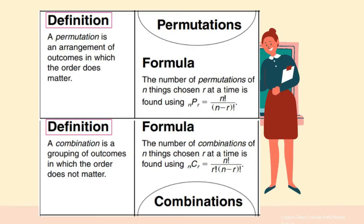Let us recall first the definition of the given two terms and their formulas. A permutation is an arrangement of outcomes in which the order does matter, and its formula is nPr = n! / (n - r)!.